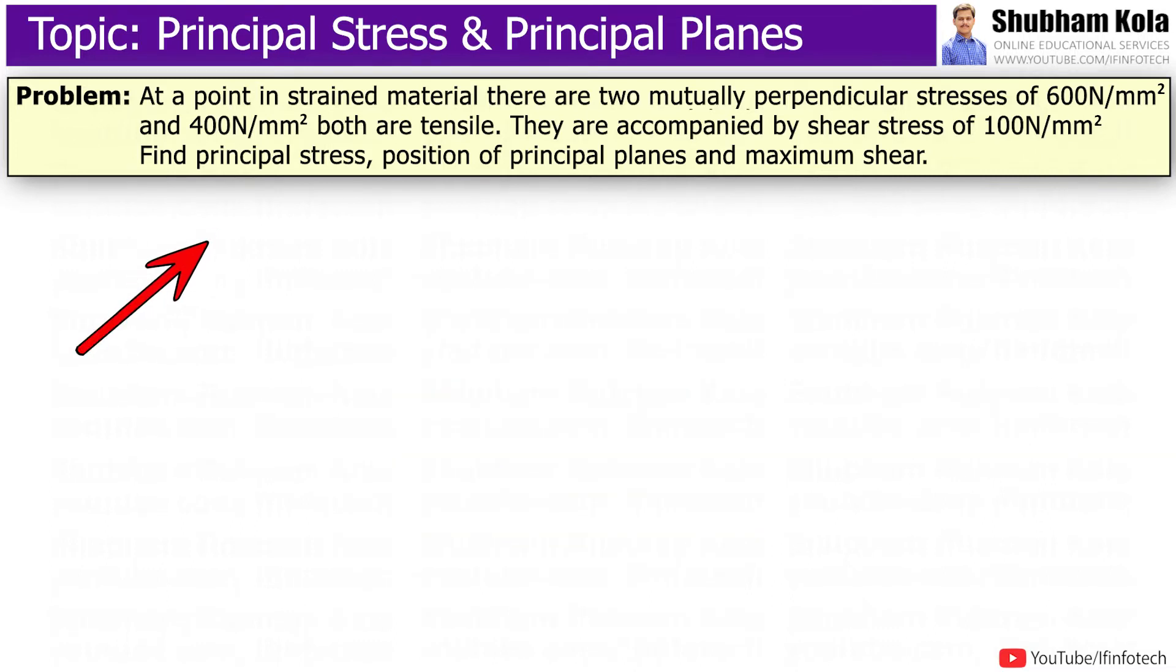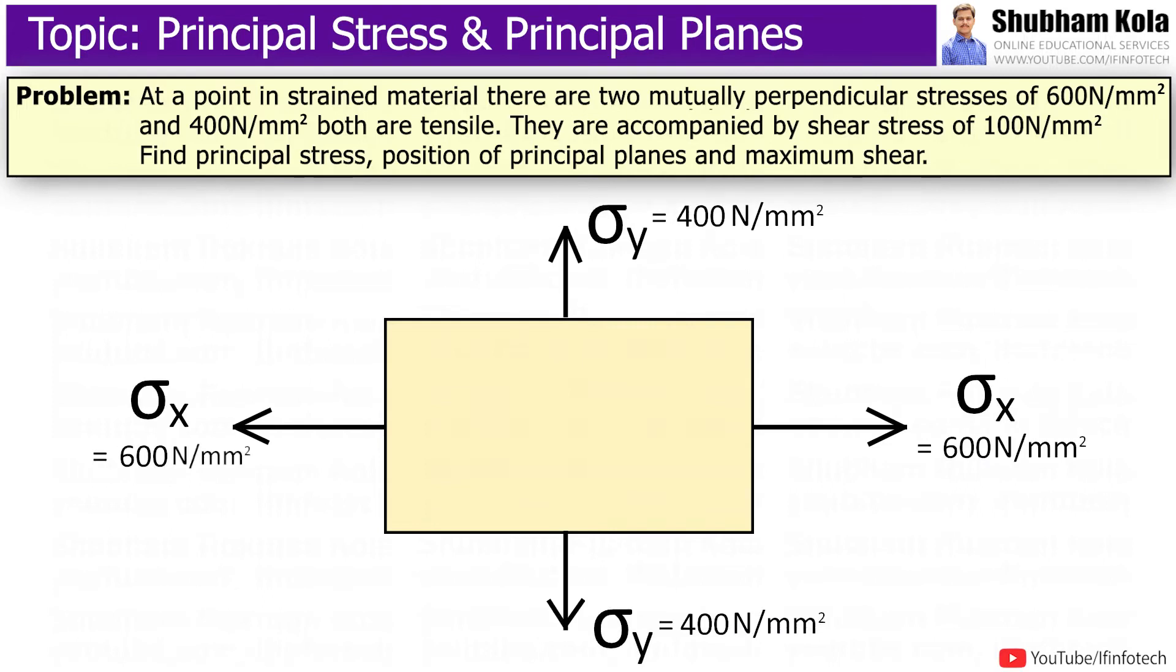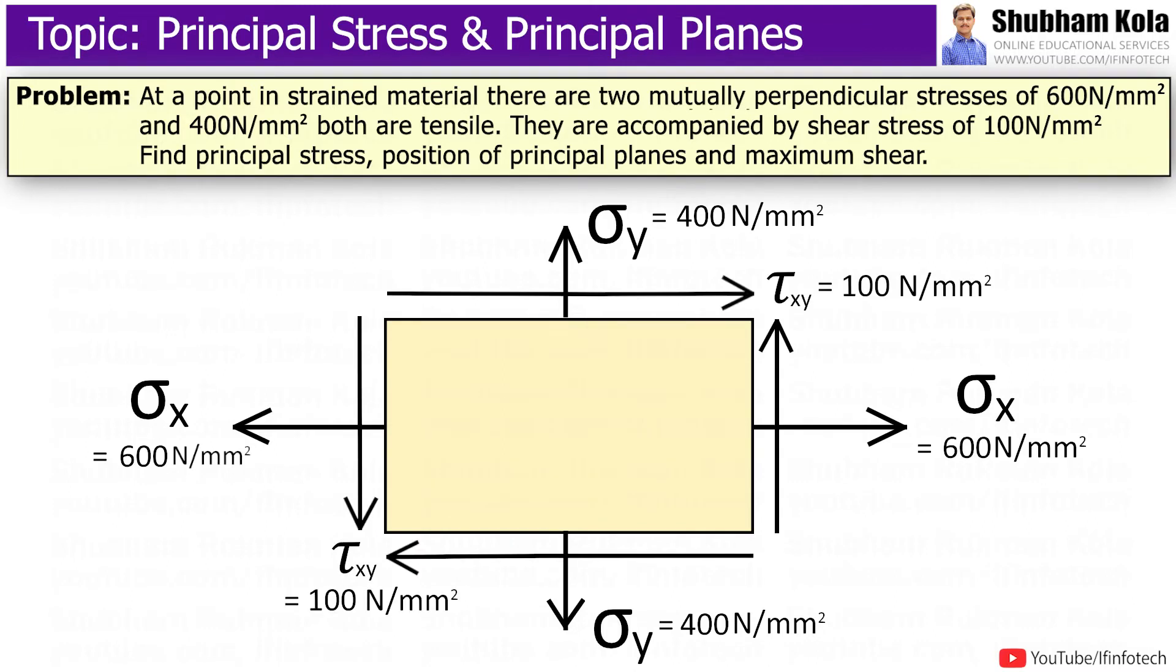For the first problem, the statement is: at a point in the strained material, there are two mutually perpendicular stresses of 600 N per mm² and 400 N per mm². Both are tensile and they are accompanied by shear stress of 100 N per mm². Find principal stress, position of principal planes, and maximum shear stress.